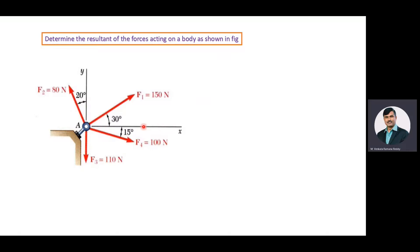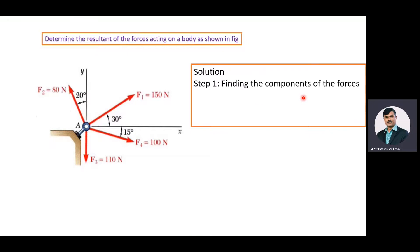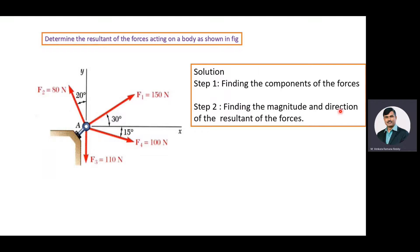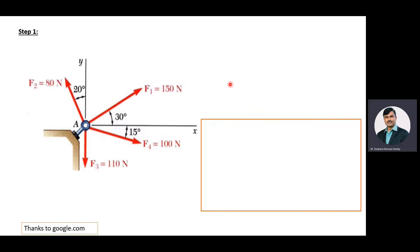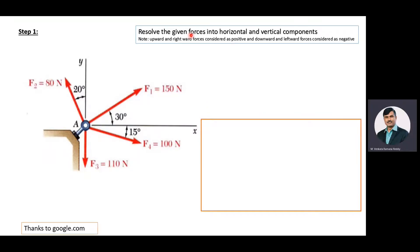Our objective is to find the resultant of the force system. The solution part is divided into two steps. Step 1: finding the components — that is horizontal as well as vertical components — for the given forces. Step 2: finding the magnitude and direction of the resultant of the forces. Next, we will resolve the forces into their horizontal as well as vertical components.